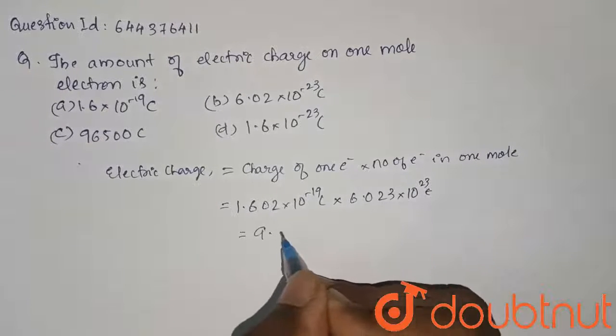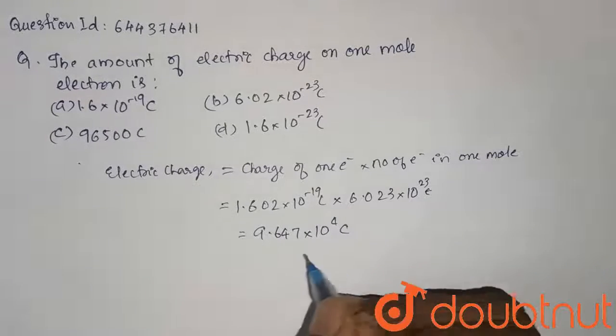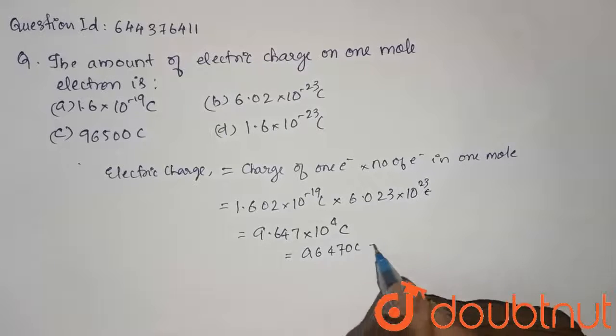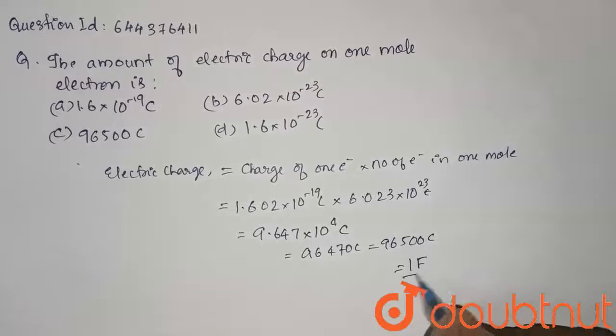Which is equal to 9.647 into 10 power 4 coulombs, which can be approximated to 96,470 coulombs. We write it as 96,500 coulombs, which is also equal to 1 faraday.